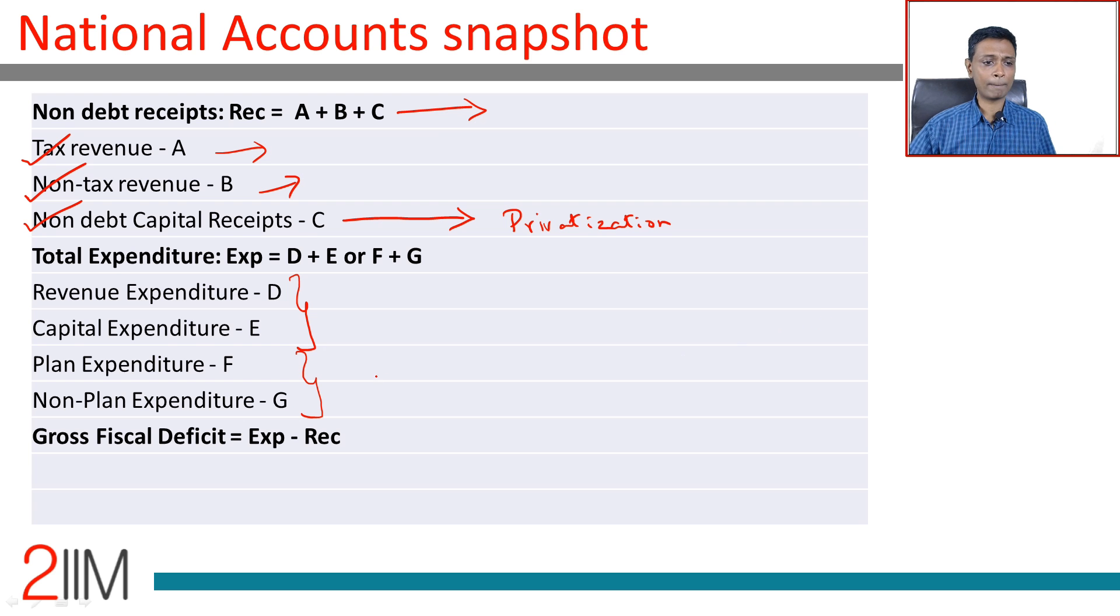Plan and non-plan: government comes up with a 5-year plan, part of our Soviet legacy, and says this is what we have planned. Whatever comes without being part of the plan is non-plan. This whole nomenclature is now being phased out, not following very seriously, so don't worry so much about it.